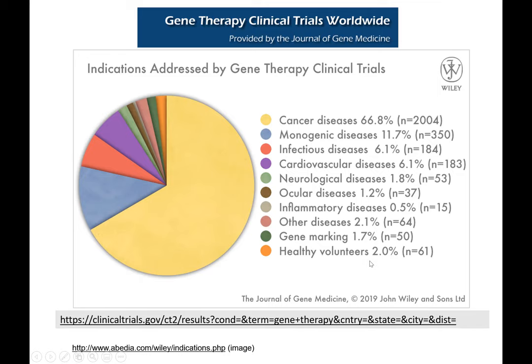What are we doing with gene therapy? Cancer diseases — it's not really gene therapy, but we use viruses to target cancer. Monogenic diseases are the biggest and easiest goal because there's one gene we're trying to replace. With the limited size capacity of viral vectors and how complicated delivery is, monogenic diseases are a big target. We also use virus vectors for infectious diseases and other applications.